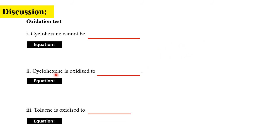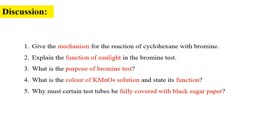Then determine what cyclohexene is oxidized to and what toluene is oxidized to. You can search the internet, reference books, or other channels to find the products. You must also show the equations for cyclohexene and toluene oxidized with KMnO4 using the Baeyer test.